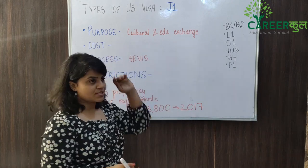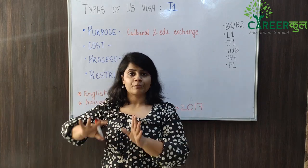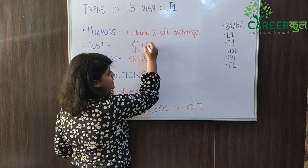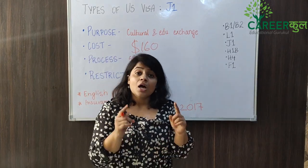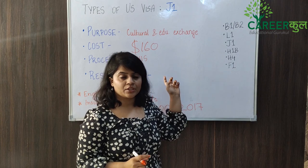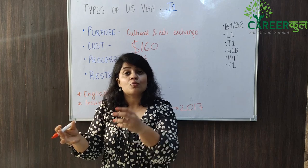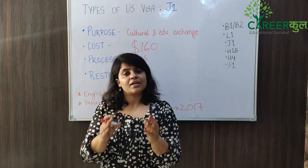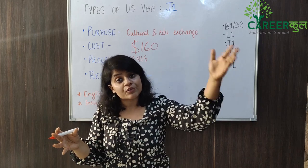What is the cost? Because you are applying for a program, the program has a different cost depending on your sponsor. But the major visa cost is $160, which means it is between 12,000 to 13,000 rupees. One additional important thing is that for the program you are doing on J1 visa, the majority of the program cost should be borne by the sponsor. For example, if you are going to do research at XYZ university, then the maximum cost will be borne by that university.